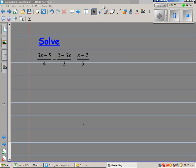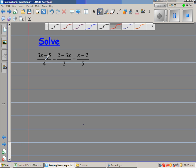Solve this equation: (3x - 5)/4 - (2 - 3x)/2 = (x - 2)/5.